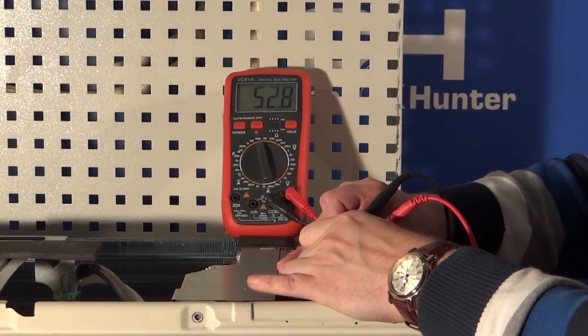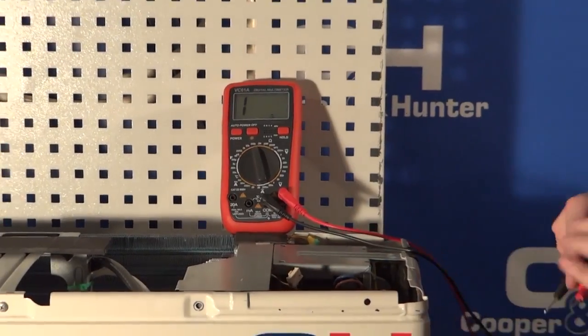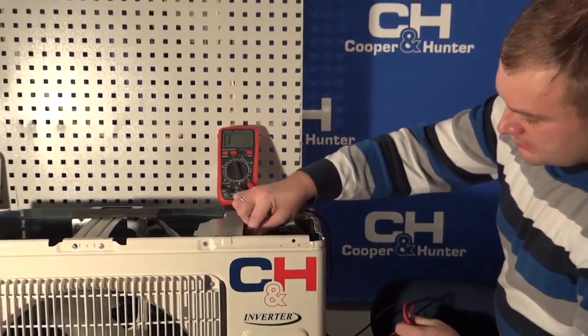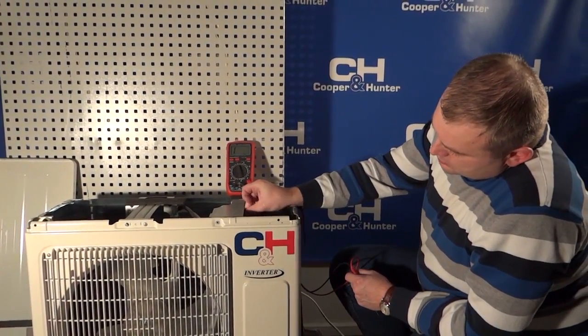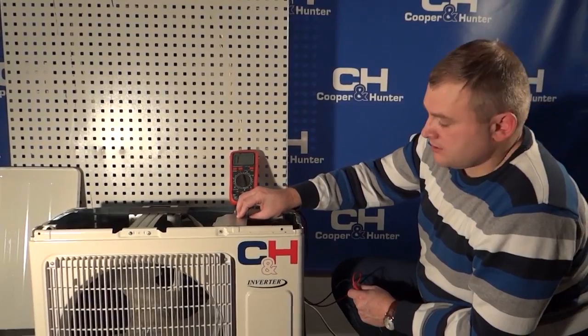Our sensors are in working order. If the sensors are in working order and the air conditioner does not operate and shows an error code, it is necessary to replace the main board of the outdoor unit. Statistics of failure of equipment Cooper & Hunter under the errors F1, F2, F3, F4, and F5 are very small.